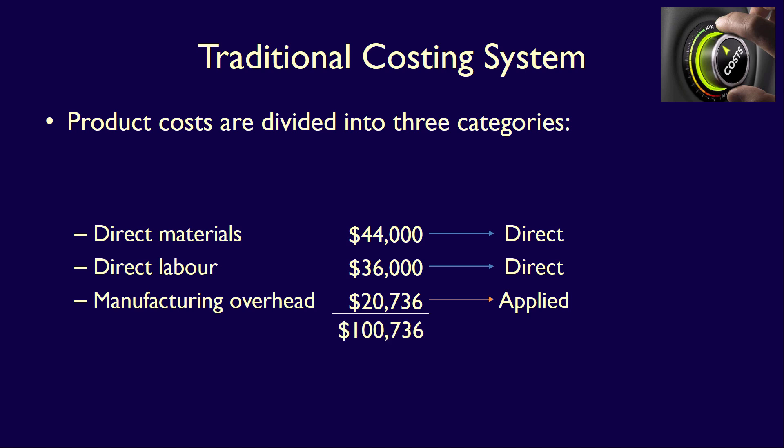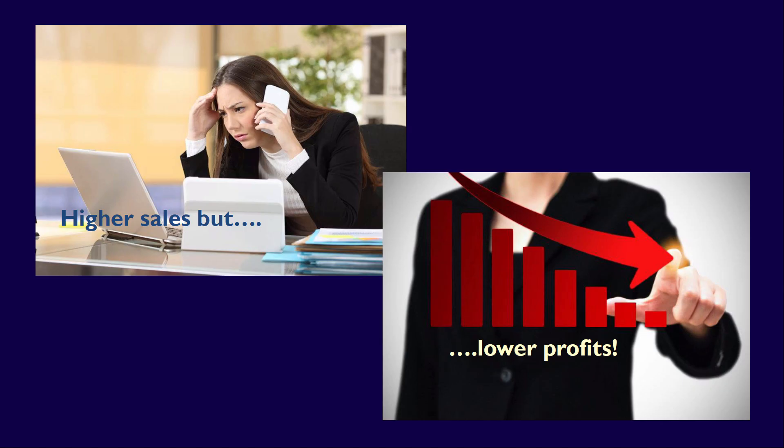The total is $100,736. The company would take this total, apply a markup, and determine the selling price to provide a final quote to the customer. This sounds very straightforward. However, management at Julian has expressed some concerns. Although the company is constantly winning new jobs and their production facilities are close to capacity, their profitability has been declining. Higher sales should mean higher profits, but that's not what they're experiencing — their profits are decreasing. Why?